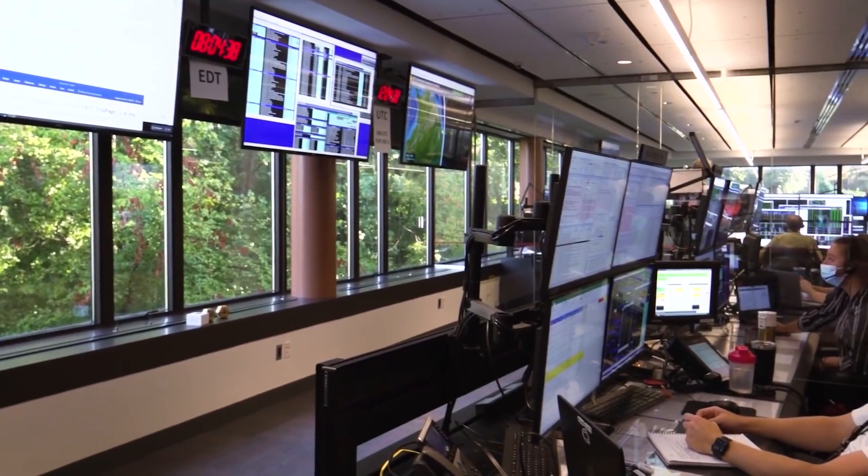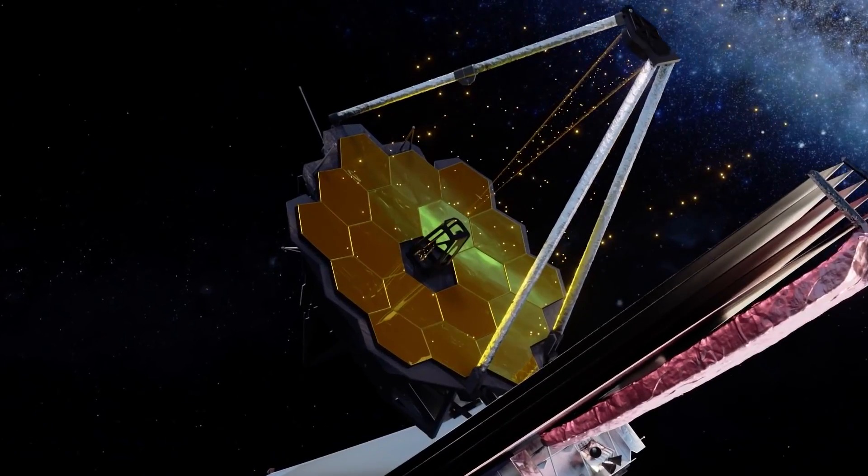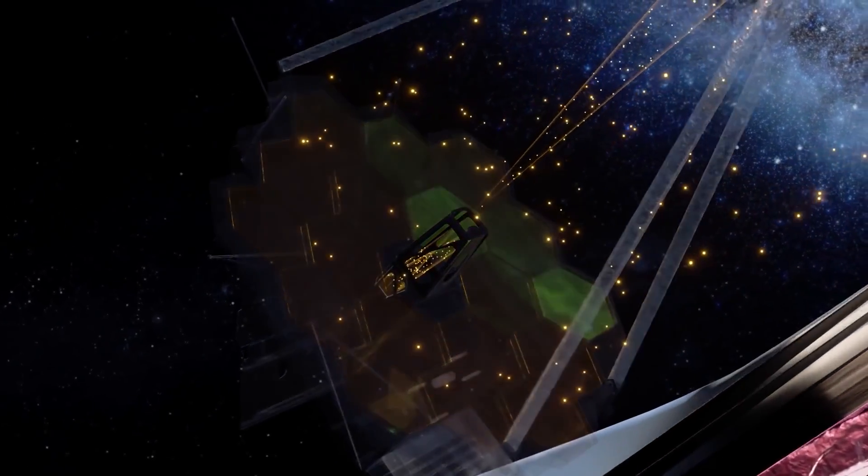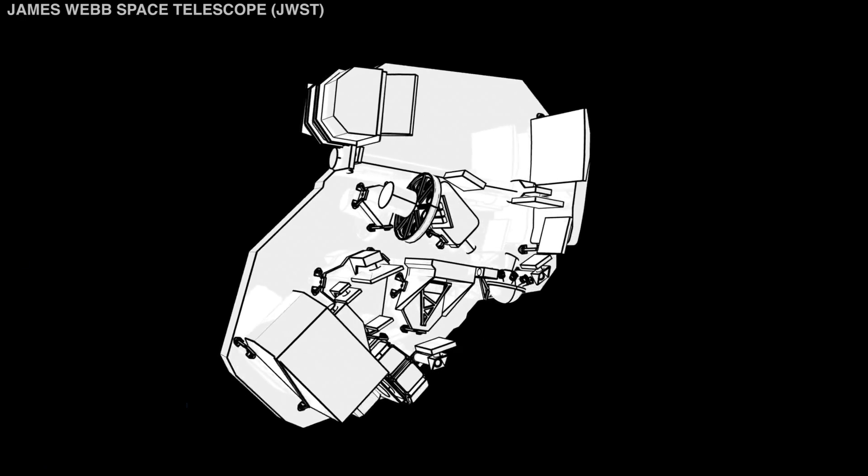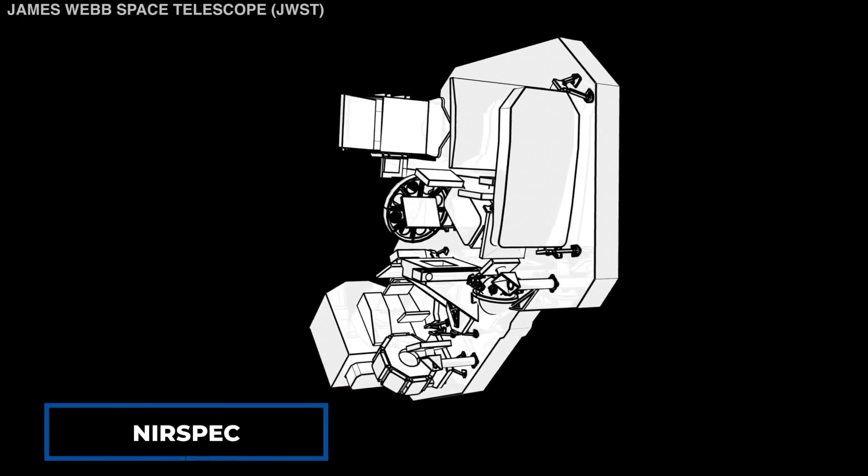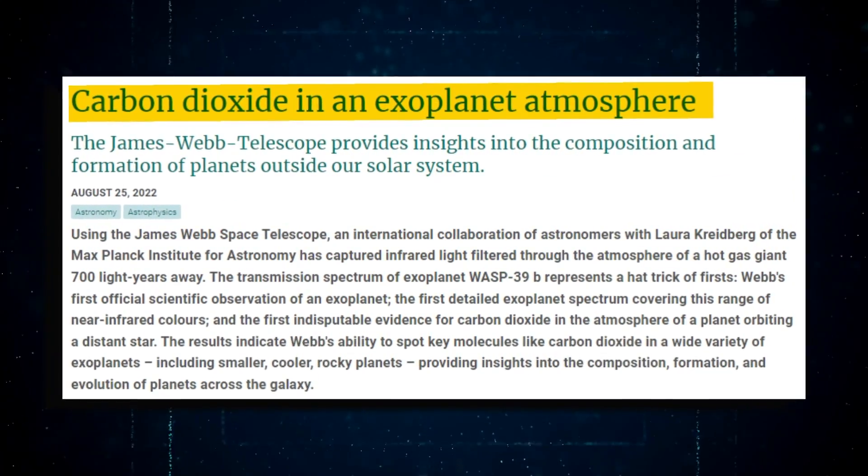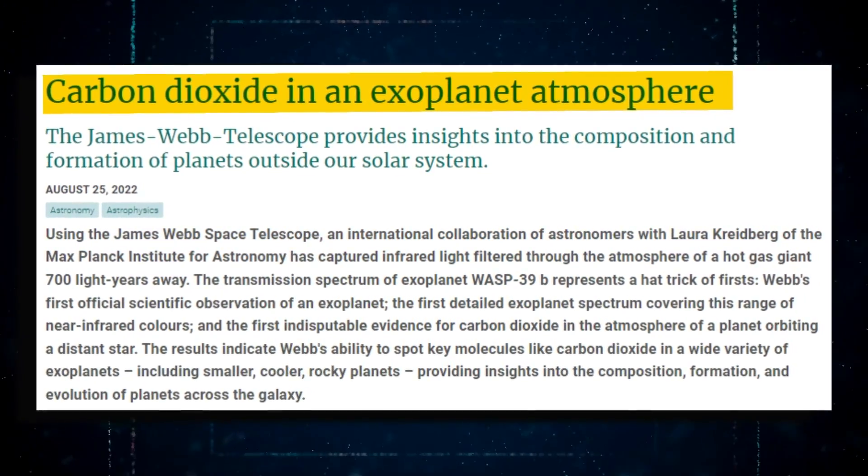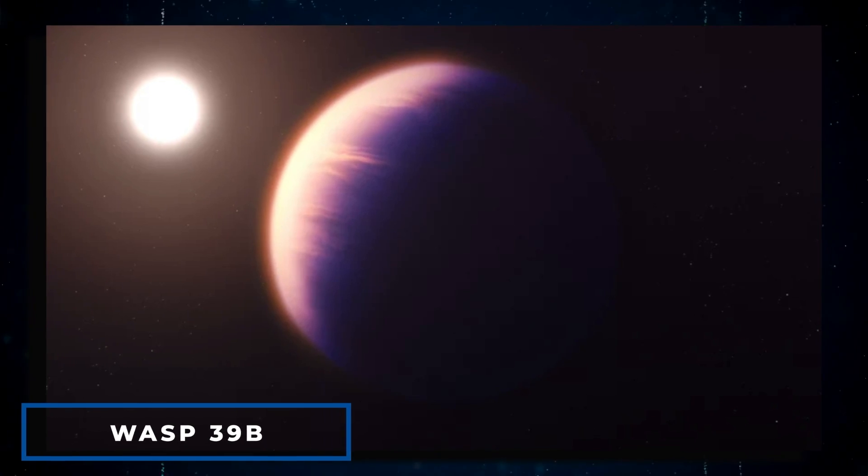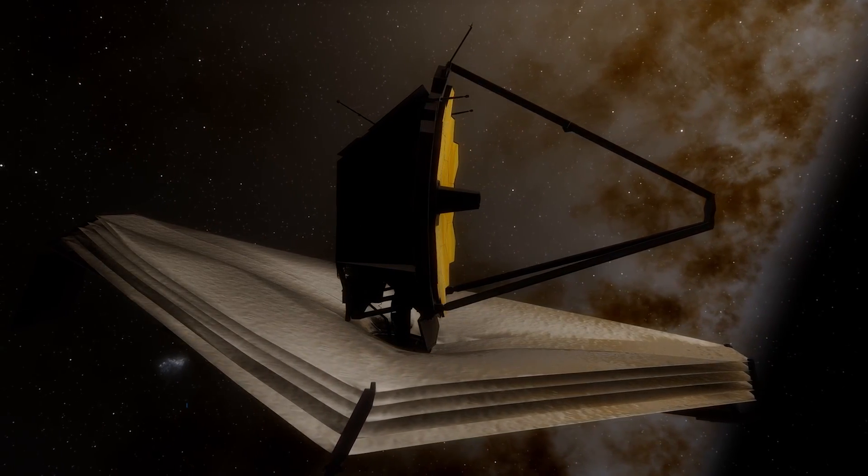James Webb Space Observatory has already captured images of galaxies so far from Earth that cosmic expansion has pushed their light deep into the infrared area of the spectrum. In addition, the near-infrared spectrograph produced the first definitive detection of carbon dioxide on an extrasolar planet when it detected the gas in the atmosphere of the exoplanet WASP-39b. But JWST has also focused on nearby places.